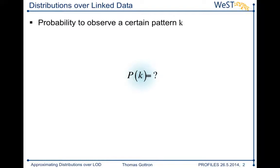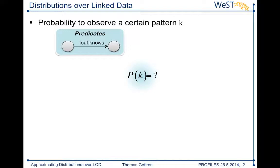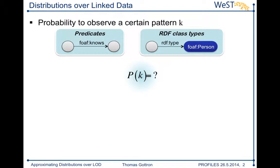A pattern can simply be a predicate. If I pick a random triple out of the linked data cloud, I would like to know how probable it is that this triple is using FOAF nodes as a predicate. In the same way I could be interested in RDF class types — if I pick a statement assigning an RDF class to an instance, how likely is that going to be a FOAF person?